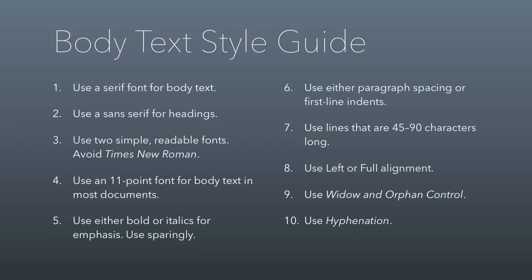All of these rules are summarized on this single slide, and I encourage you to use these 10 rules as a baseline for all body text in your documents — for every document you write in this program, during your degree, and in your entire career. Use a serif font for body text and a sans-serif font for headings. Use two simple, readable fonts and avoid Times New Roman. Use an 11-point font for body text in most documents. Use either bold or italics for emphasis, not both, and use them sparingly. Use either paragraph spacing or first-line indents. Use lines 45 to 90 characters long. Use left or full alignment. Use widow and orphan control. Use hyphenation.